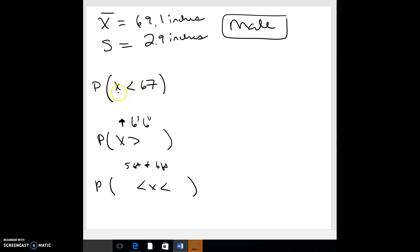First, find the probability that a male is less than 67 inches. Second, what's the probability that males are taller than 6 feet 6 inches, so you're going to have to convert this to inches. And then what's the probability that a male's height is between 5 feet and 6 feet. Again, you're going to need to do that conversion and get a z-score for each of these.